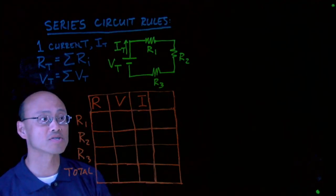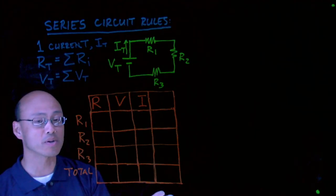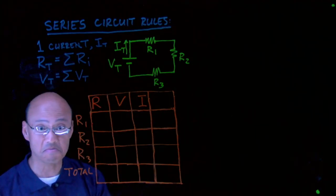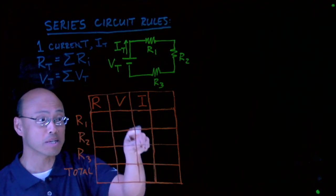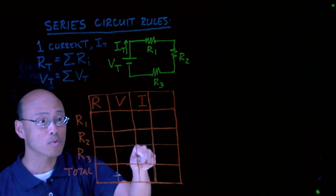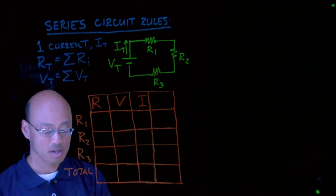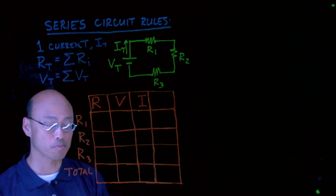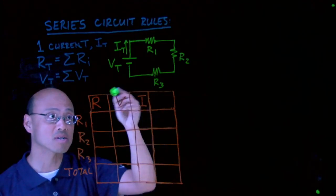So when we analyze a circuit, our goal is essentially, whenever we're trying to find something in a homework problem, we're basically going to be trying to find, probably nine times out of ten, just what goes in one of these boxes. So this is going to be a sample problem and in the sample you'll see how this kind of all comes together.